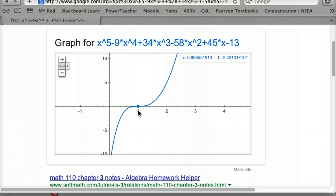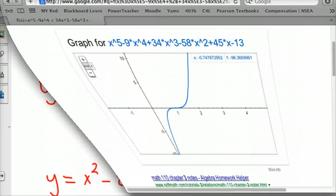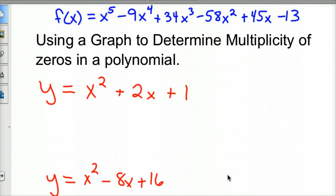Notice how it kind of flattens out at 1 and then goes back up. That tells me, actually that tells me that there are 3 roots there at 1. So it happens 3 times. And so let me kind of go through that progression with you so you can see that. Let's say you had x squared plus 2x plus 1. We'll go to an easier one.